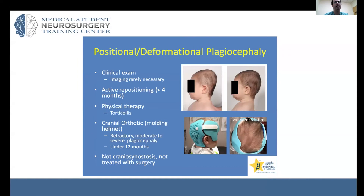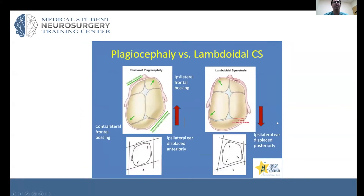Because the bones are so soft in young children, it can lead to what's called acquired positional plagiocephaly. Babies may have flattening of one side of the head. The key take-home message is that you want to differentiate this from lambdoid synostosis.